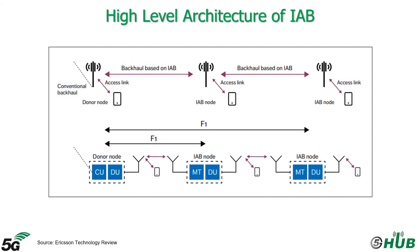Architecture-wise, IAB is based on the CU-DU split introduced in Release 15. The CU-DU split implies that the base station is split into two parts: a centralized unit (CU) and one or more distributed units (DUs), where the CU and DUs may be physically separated depending on the deployment. As highlighted in the lower part of the figure, an IAB node includes a conventional DU part that creates cells to which UEs and other IAB nodes can connect. The IAB node also includes a mobile termination (MT) part, providing connectivity for the IAB node to the DU of the donor node.